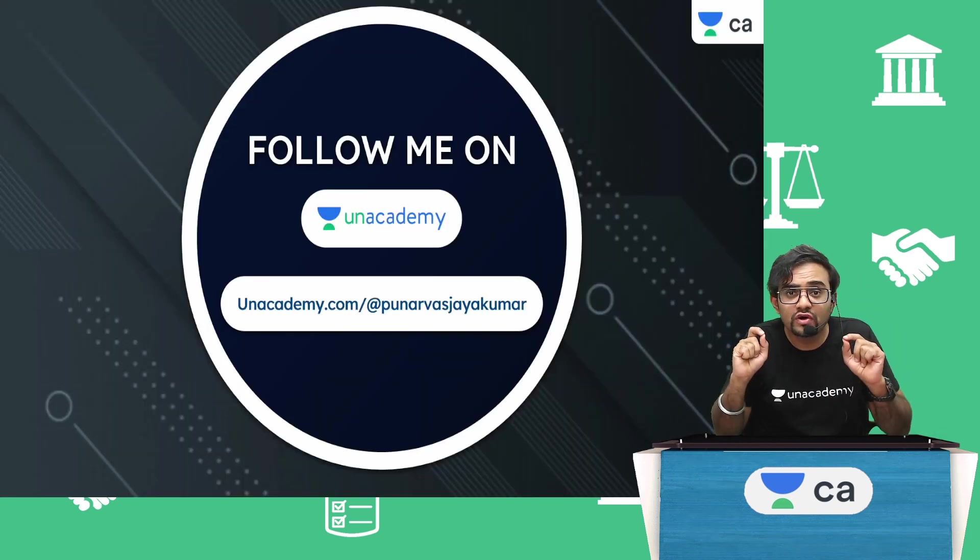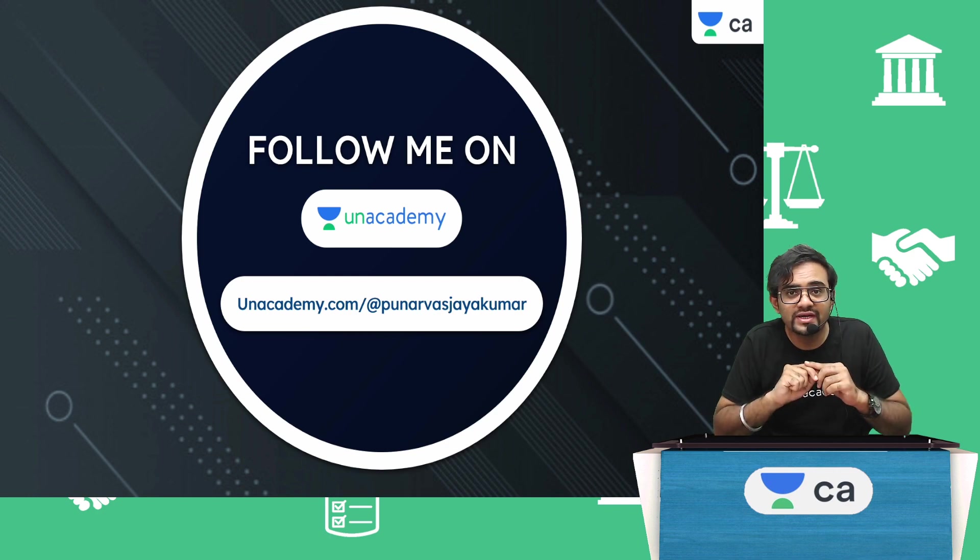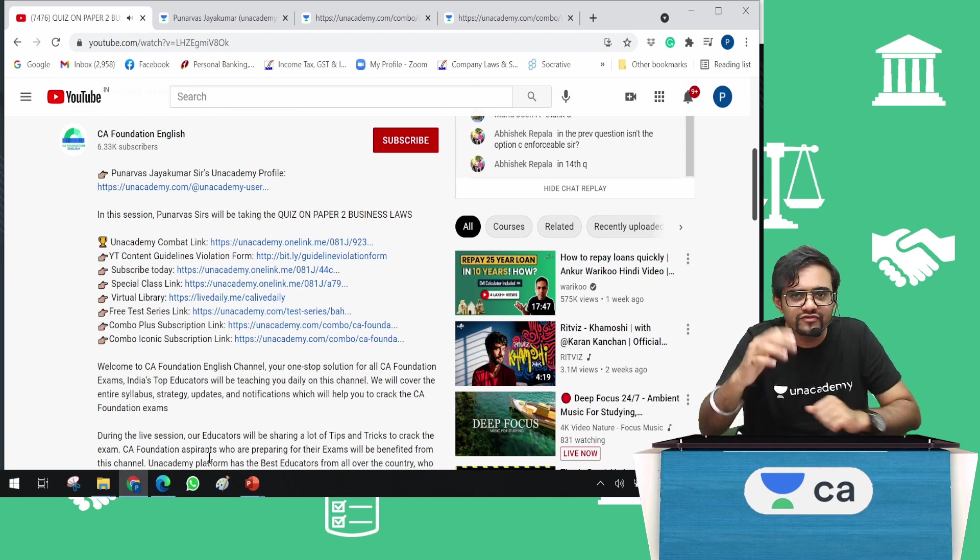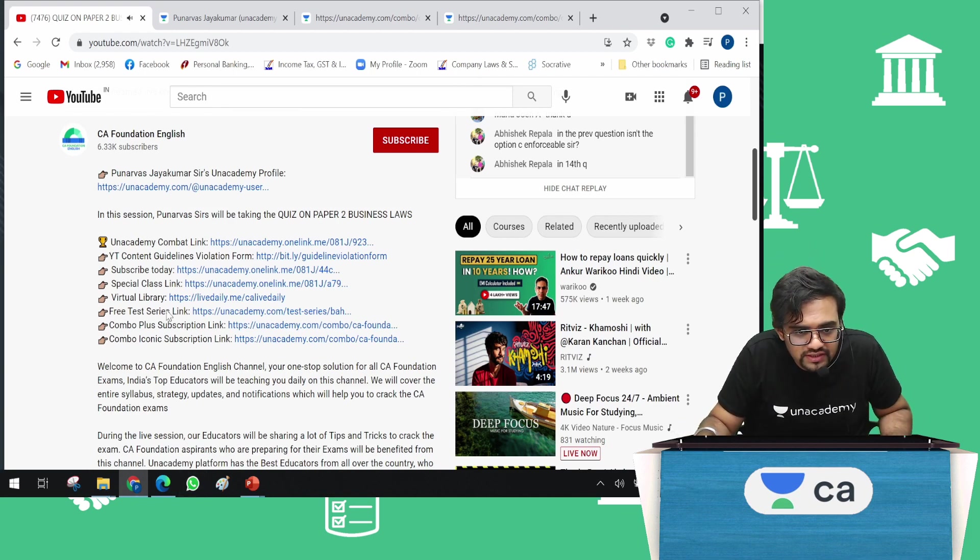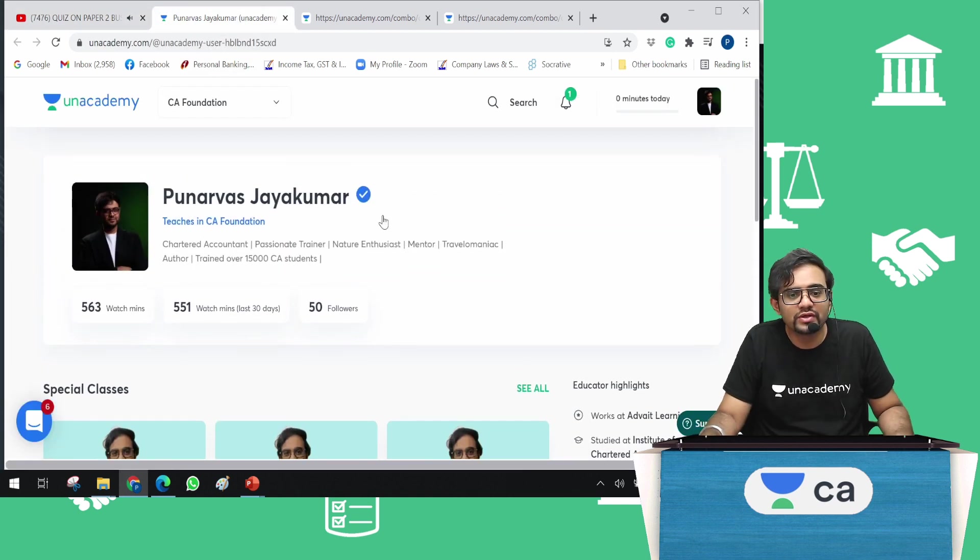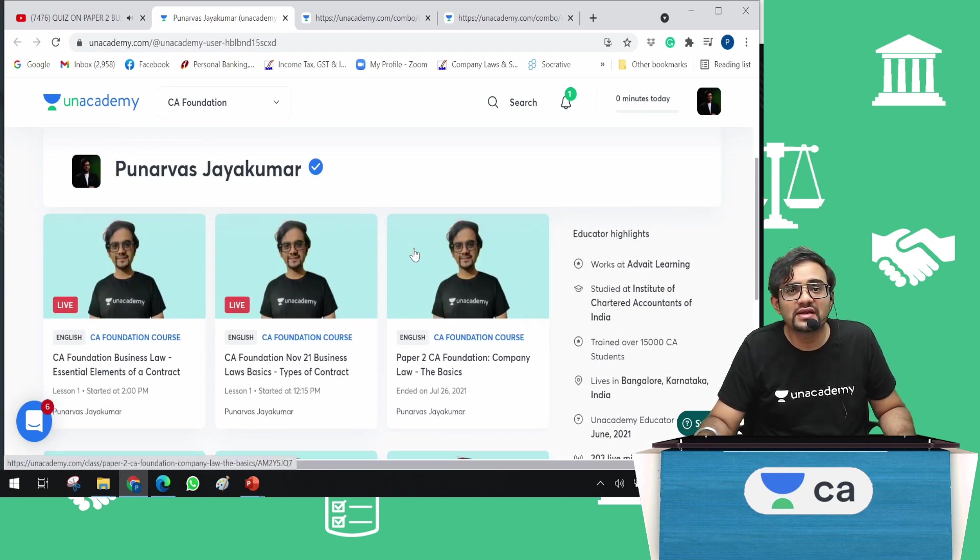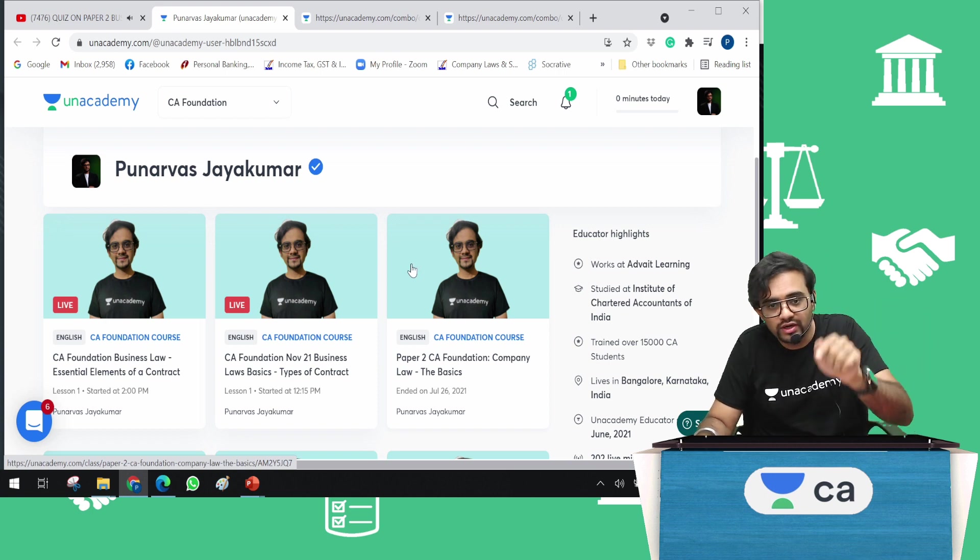As I told you, without fail, please follow me on unacademy.com slash punarvousjaykumar. If you don't know what to do, go to any of my videos and check out the link here. Once you click on that, it will take you here where you will see all my followers. Please follow me and you will see my special classes, free classes. To enter the class, you just need to put the code PJSIRLAW. If you want a discount, you have to put the code PJSIRLAW. Very simple, my dear friends.